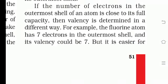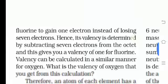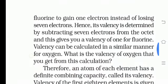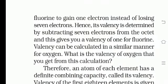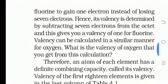For example, fluorine has seven electrons in its outermost shell, so its valence could be seven. But it is easier for fluorine to gain one electron instead of losing seven electrons. So fluorine ko sirf ek hi electron gain karna hai — uski gaining tendency kam hai as compared to losing tendency.